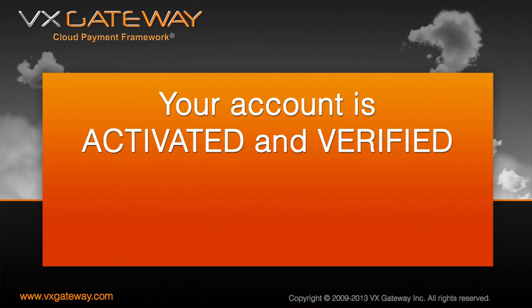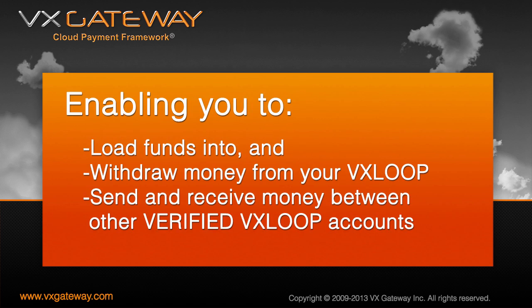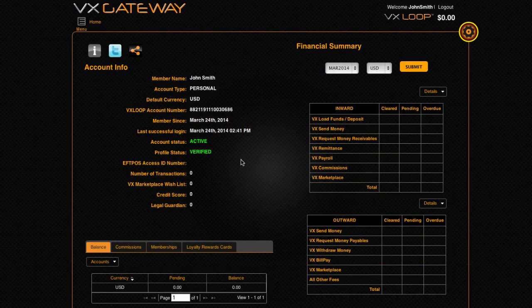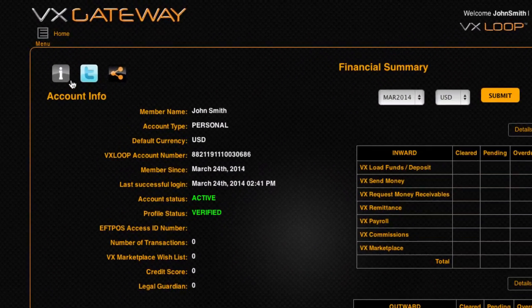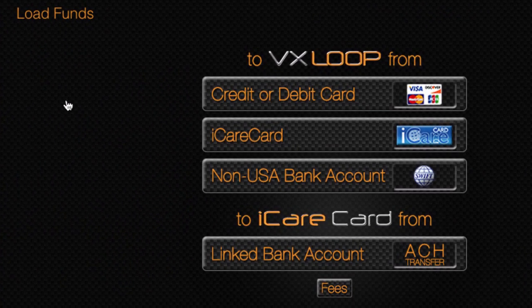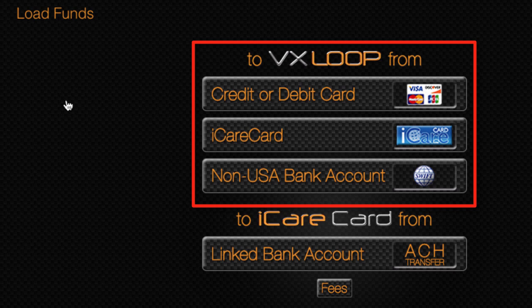Now that your account is activated and verified, you are able to load money into and withdraw money from your VxLoop e-wallet, as well as send money to other verified VxLoop e-wallets. Let's take a look at load funds first. Loading funds onto your VxLoop is a quick and easy process that can be accessed from Load Funds. From this screen, you can add funds to your VxLoop e-wallet from several sources.